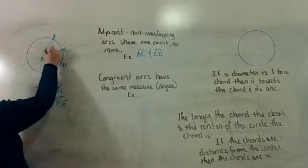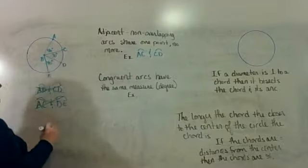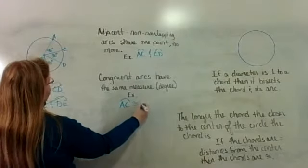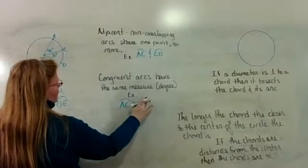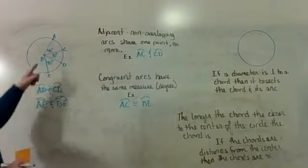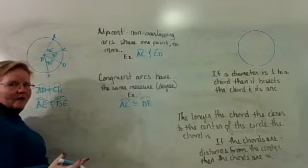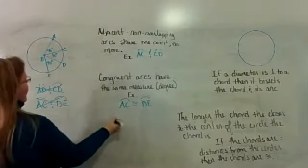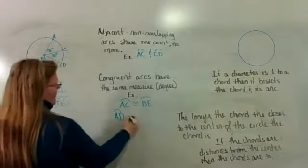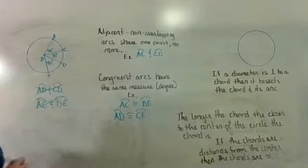If arc AC is 40 degrees and arc DE is 40 degrees and another arc is 30 degrees, then the congruent arcs would be arc AC congruent to arc DE because they have the same degree measure. You can also say that arc AD, which is 70 degrees, is congruent to arc CE, which is also 70 degrees.